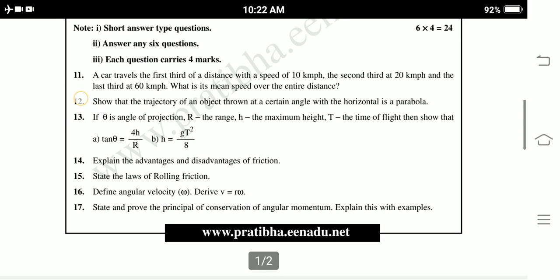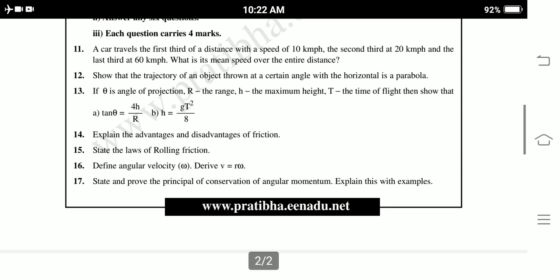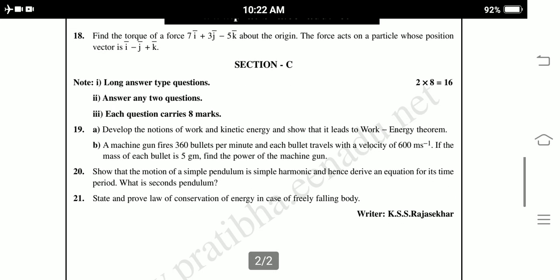Fifteenth question: State laws of rolling friction. Sixteenth question: Define angular velocity and derive V equals R omega. State and prove the principle of conservation of angular momentum, explain this with an example. Eighteenth question: Find the torque of the force 7i plus 3j minus 5k bar above the origin. The force acts on a particle whose position vector is i bar minus j bar plus k bar. In questions 11 to 18, we need to attend only 6 questions, 2 are optional.